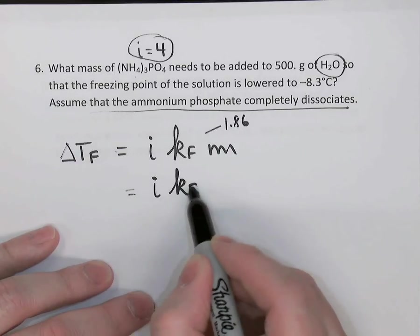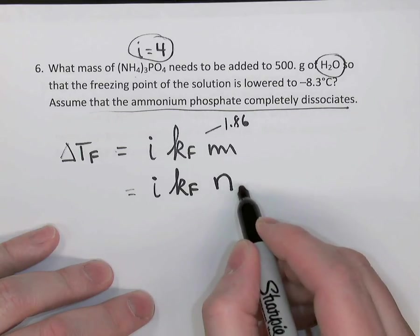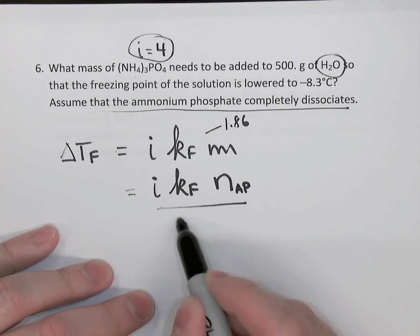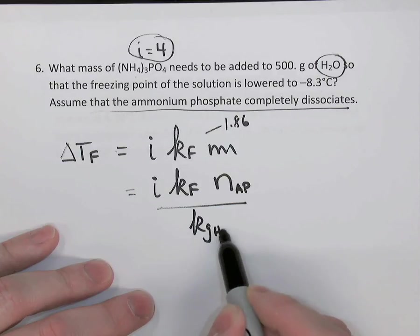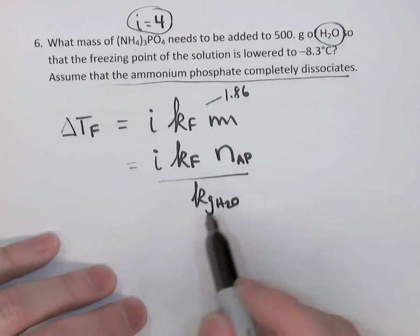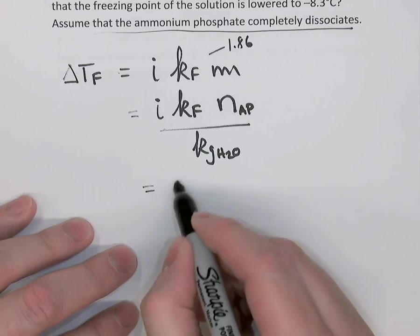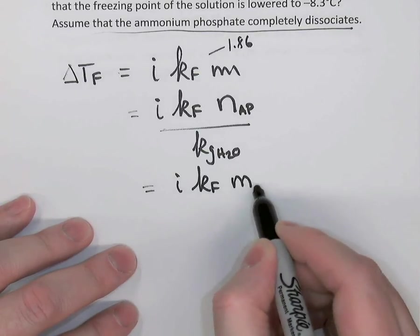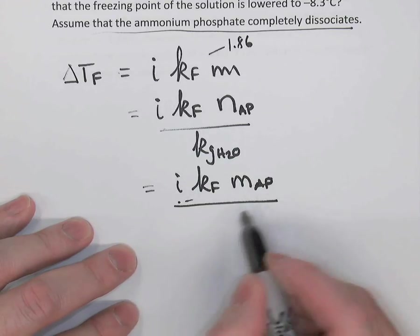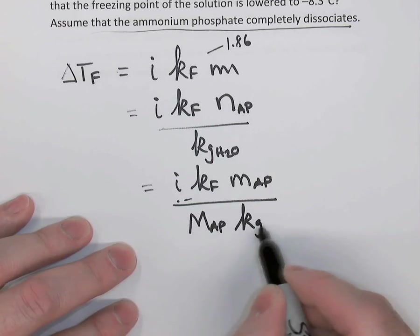So we can take our formula and change molality to moles of the solute. I'll just say moles of AP, ammonium phosphate, divided by the kilograms of water, which is our solvent. But moles is mass divided by molar mass. So we can replace the moles of ammonium phosphate with mass of ammonium phosphate divided by the molar mass of ammonium phosphate, and we still have that kilograms of water. So we're just doing some algebra here.